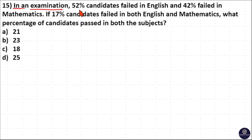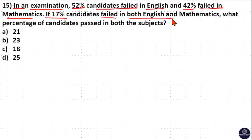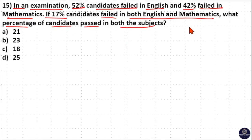In an examination, 52% of candidates failed in English and 42% failed in Mathematics. If 17% of candidates failed in both English and Mathematics, what percentage of candidates passed in both subjects?